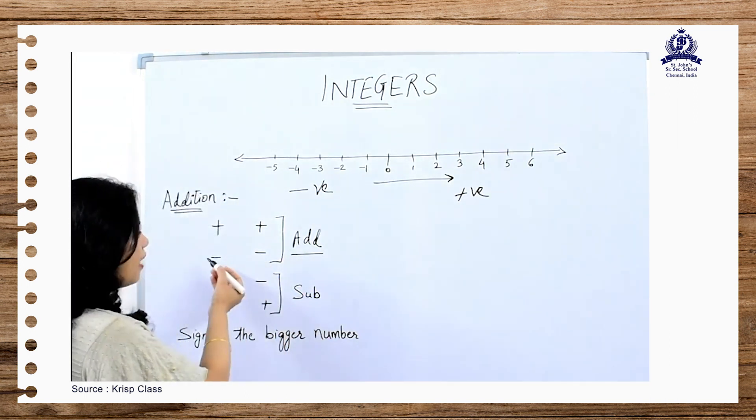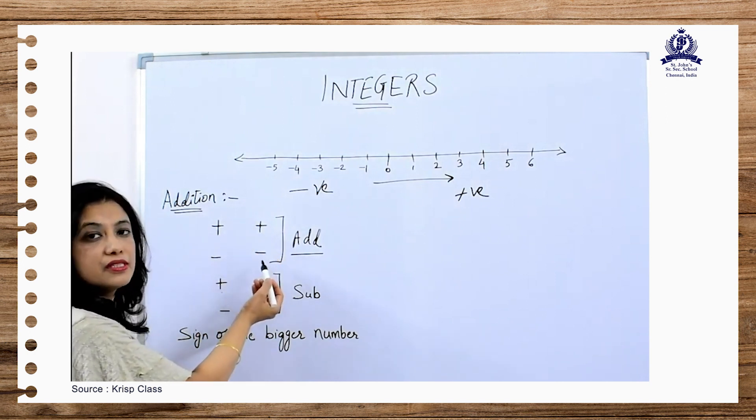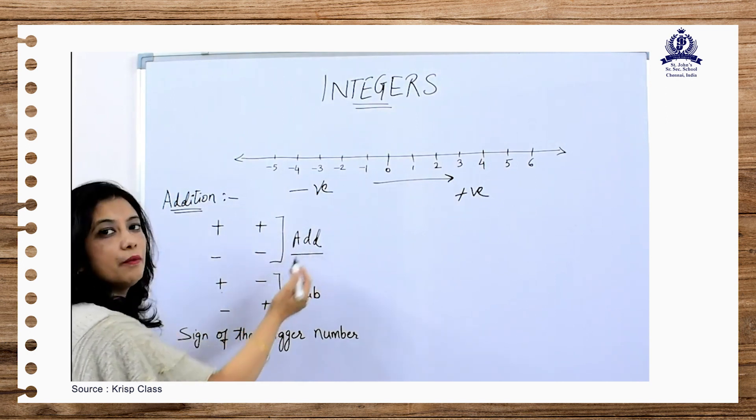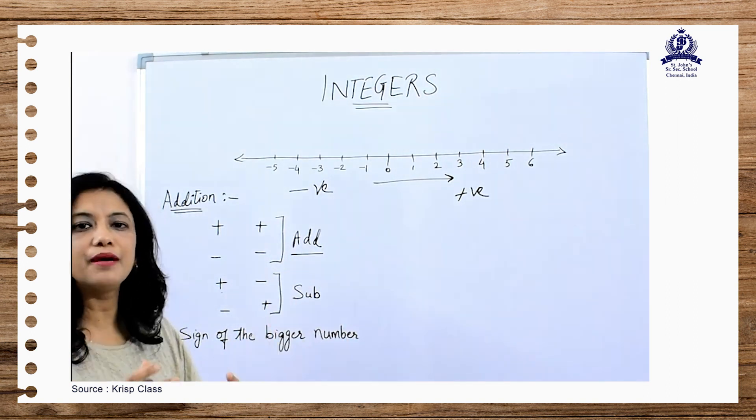So whenever we have same type of numbers, meaning both positive or both negative, then we add them up. Because they are the same type of numbers, we will club them and sum them up.